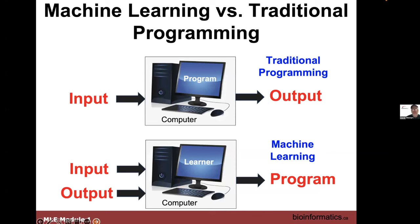In traditional programming, you provide input, write rules in an algorithm or program, and get output — like writing a program that says 'Hello World' and asks for your name. The difference with machine learning is that instead of providing just input, you provide both input and output as a data set — what's called labeled data. Rather than running it through a program, you run it through a learner or model, which produces a program that understands the mapping between input and output.